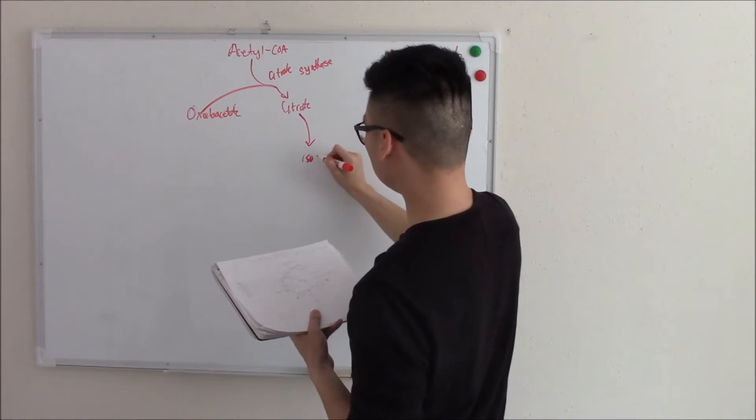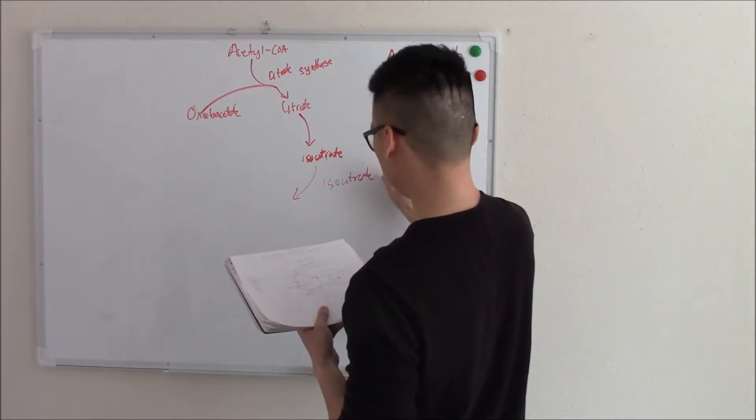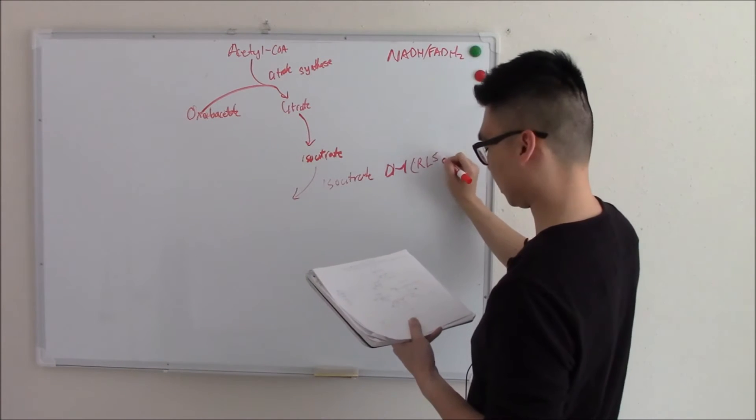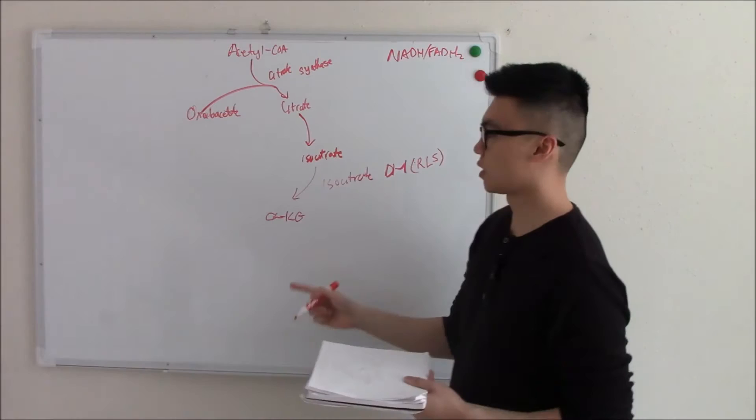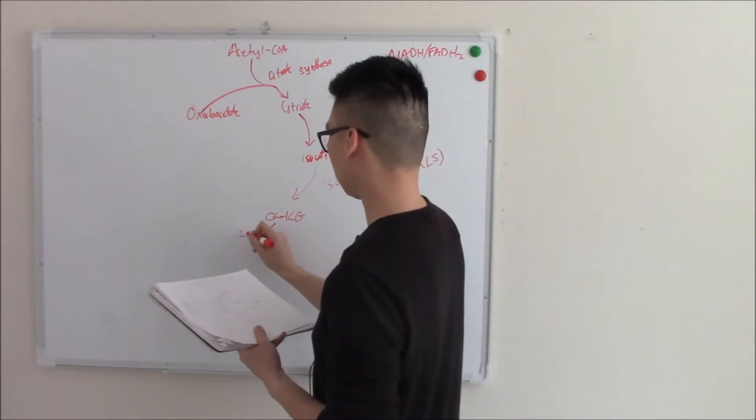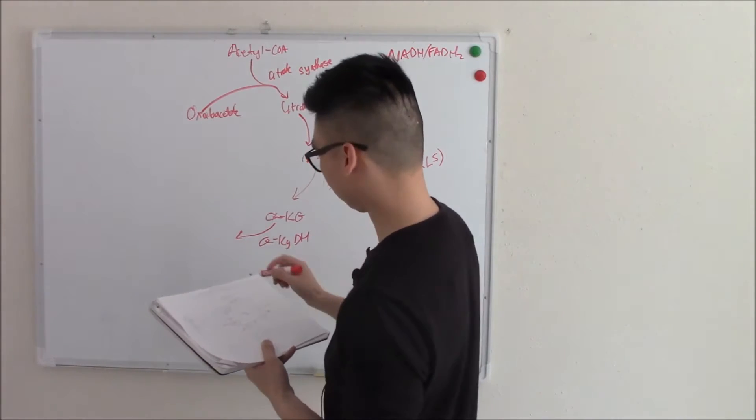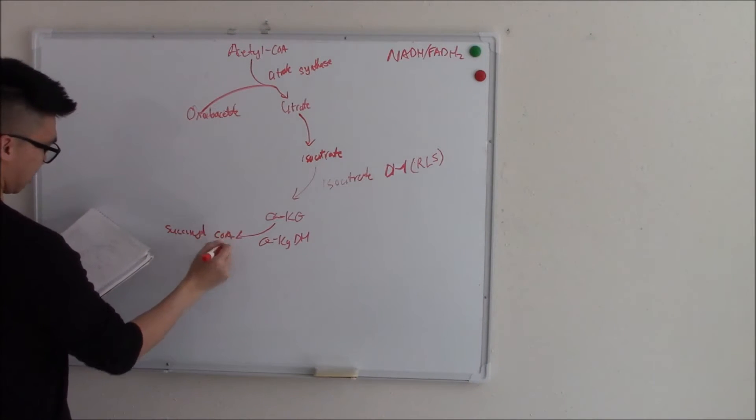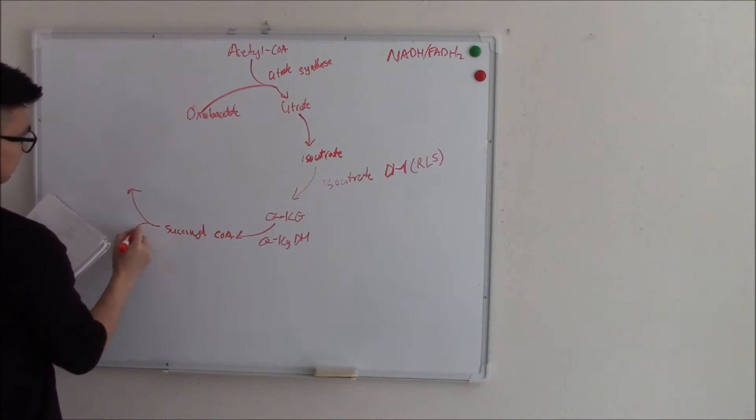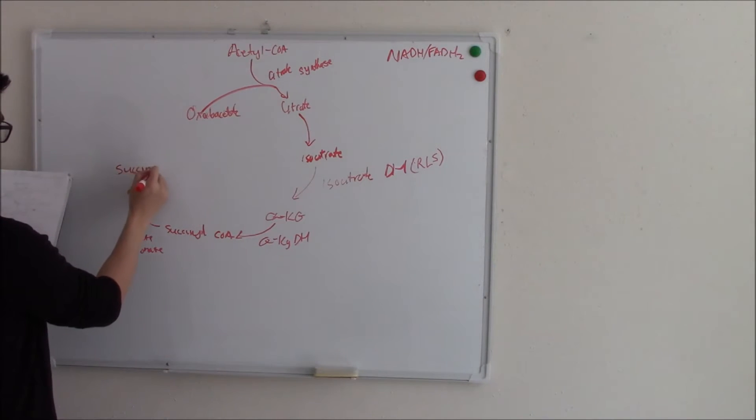Citrate makes isocitrate via isocitrate dehydrogenase, and this is important because this is the rate limiting step. Isocitrate goes to alpha-ketoglutarate, or alpha-KG. That gets worked on by alpha-KG dehydrogenase to make succinyl-CoA. Succinyl-CoA gets worked on by succinyl-CoA thiokinase to create succinate.